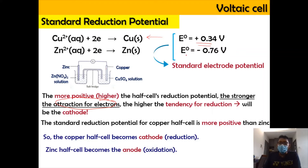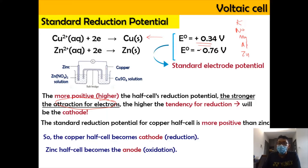So instead of using the electrochemical series learned in high school — potassium, sodium, magnesium, aluminium, zinc, and so on — you can use the standard reduction potential values to determine which is cathode and which is anode. The more positive value is the cathode.